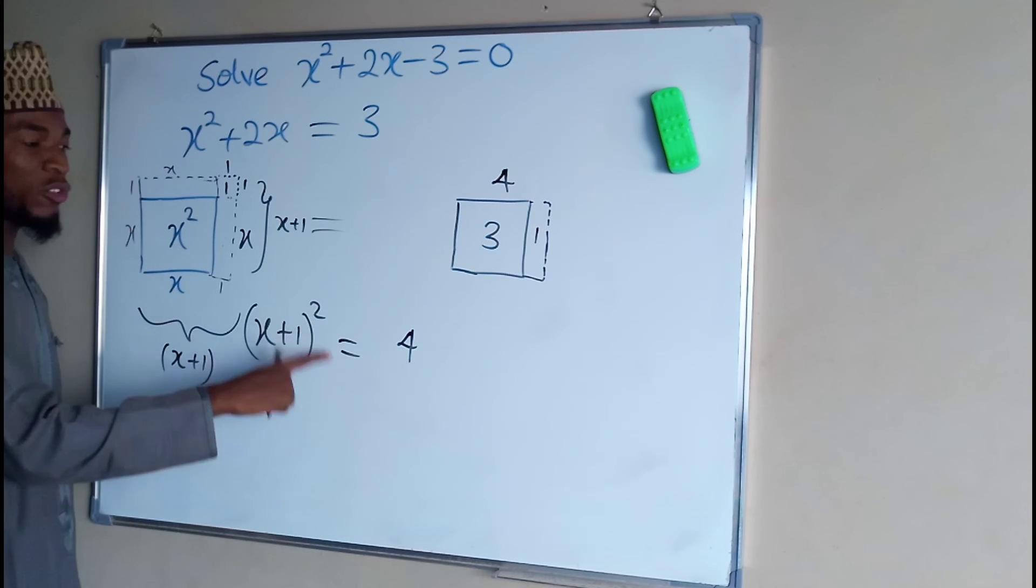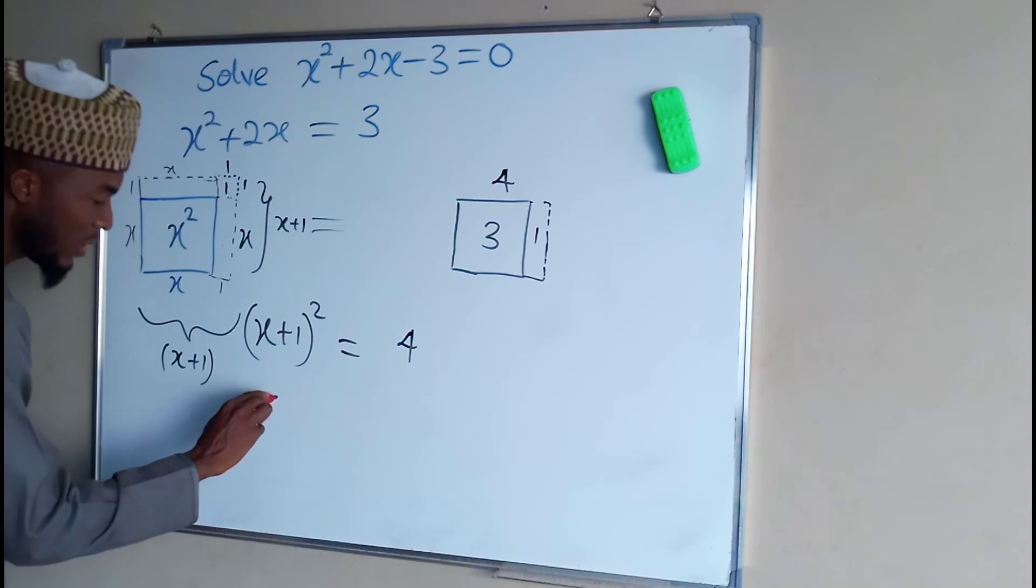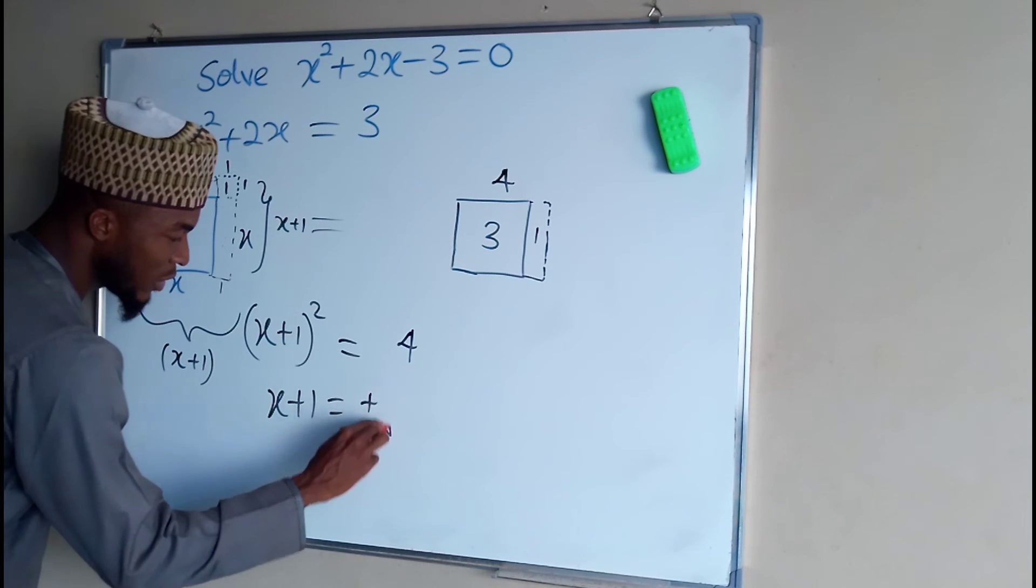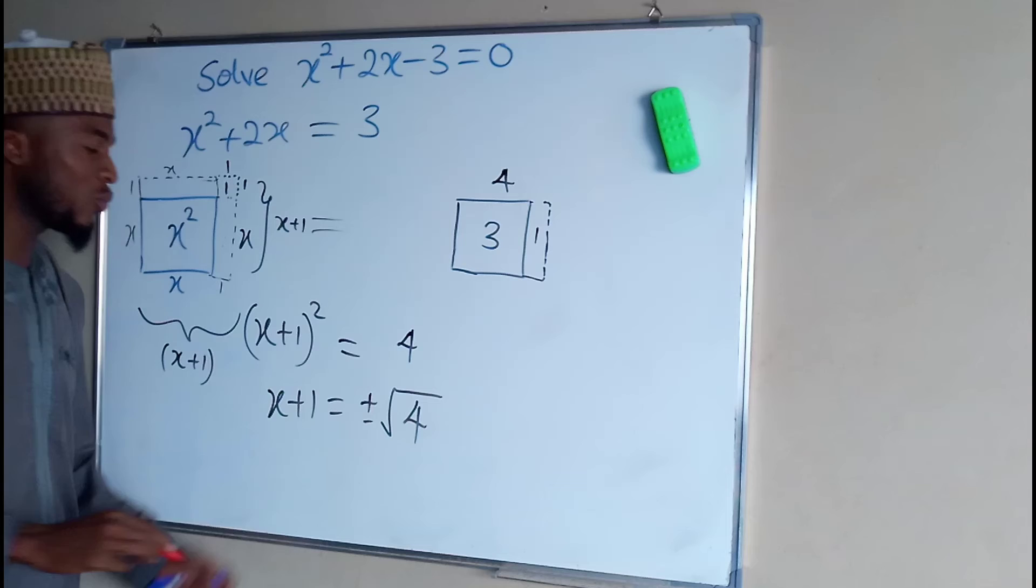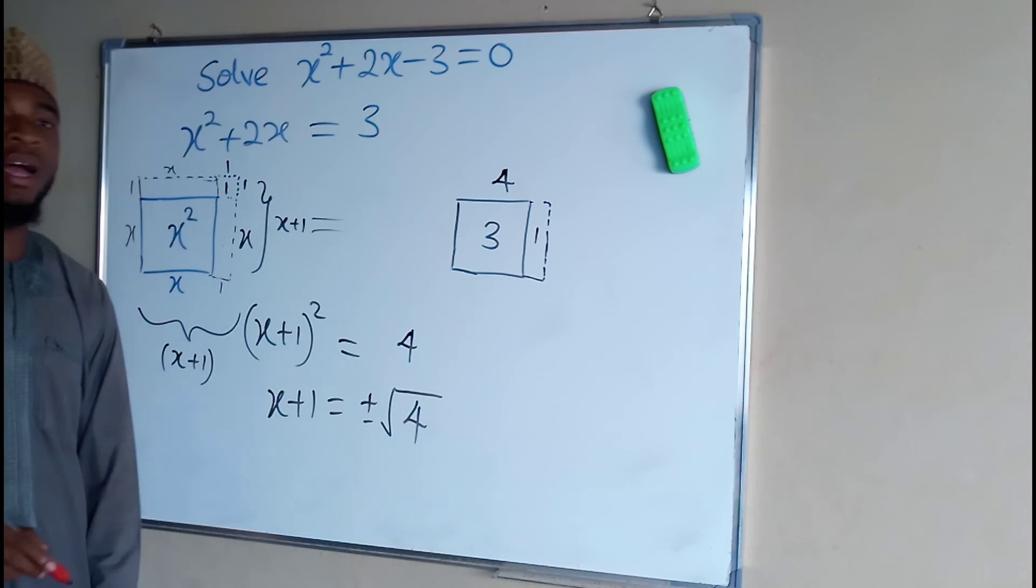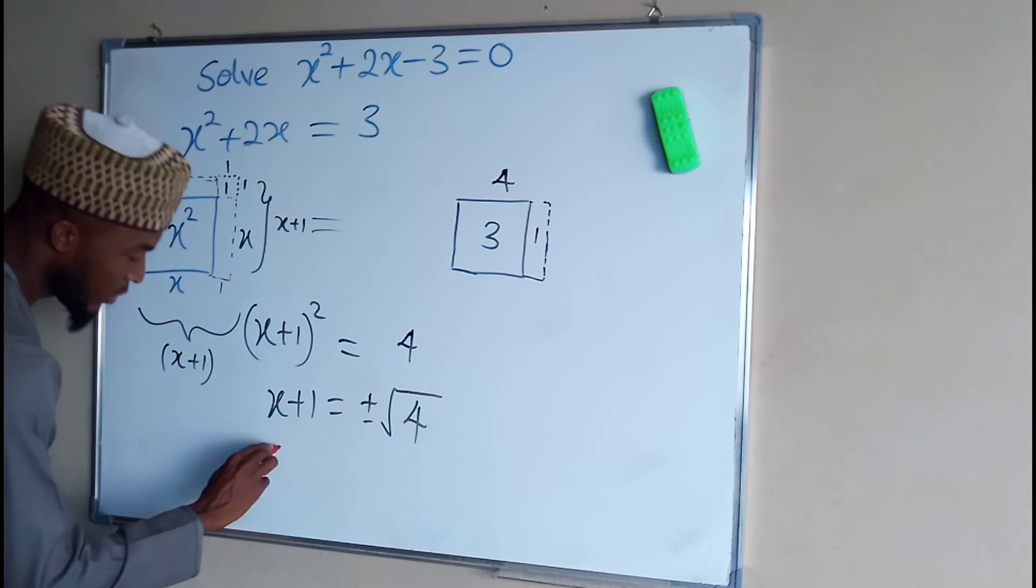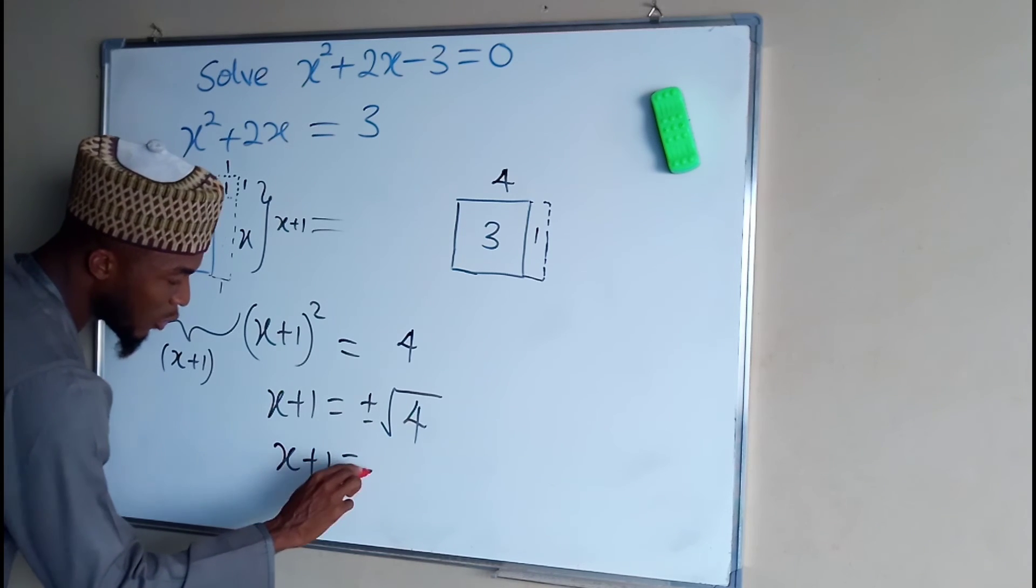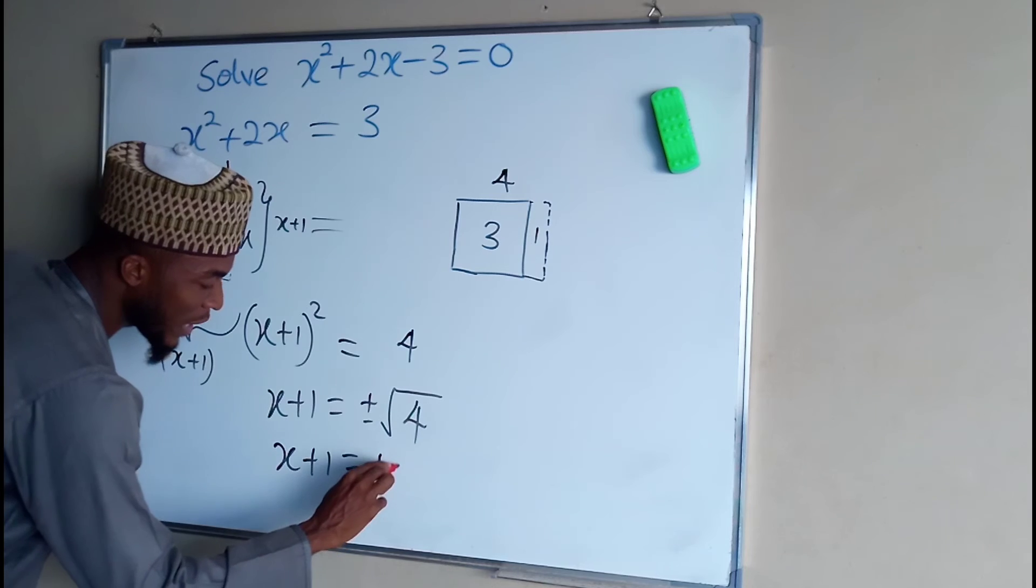Now to eliminate this square, we need to take the square root of each side. x plus 1 will be equal to plus or minus square root of 4. Because we now introduce square root of 4, therefore we have to add plus or minus.